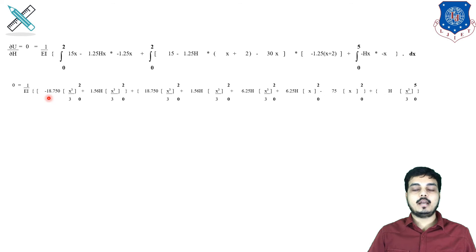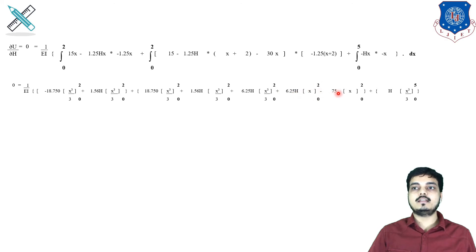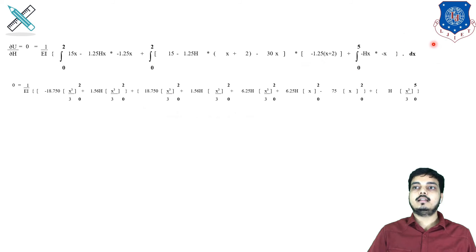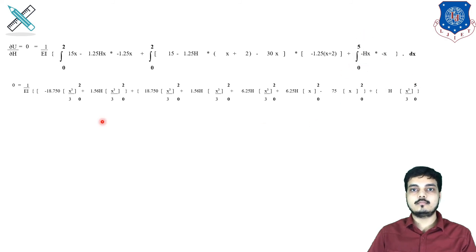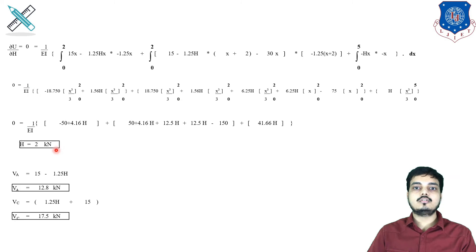After integration, for the first segment we get −18.75·[x³/3] from 0 to 2 plus 1.56H·[x³/3] from 0 to 2. For the second segment terms: 18.75·[x³/3], 1.56·[x³/3], 6.25·[x³/3], and 6.75·[x³/3], all from 0 to 2. For the third segment: H·[x³/3] from 0 to 5. Setting the total equal to zero, since there is only one unknown H, we solve directly and get H = 2 kN.